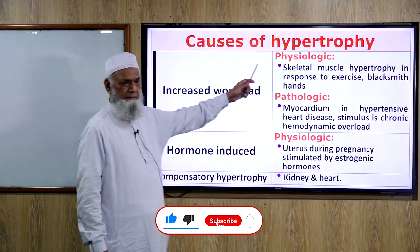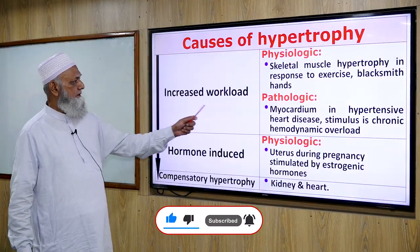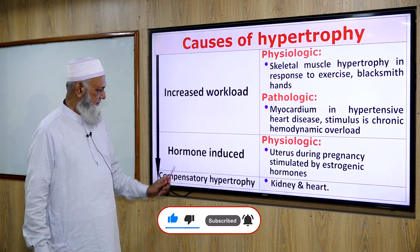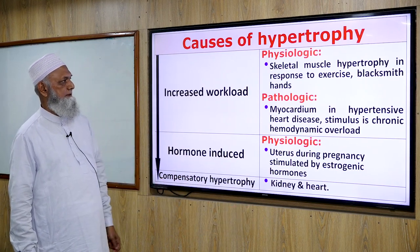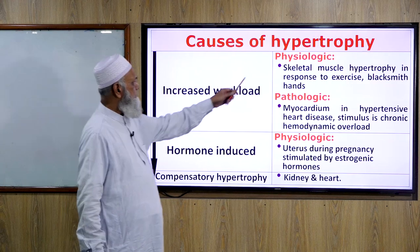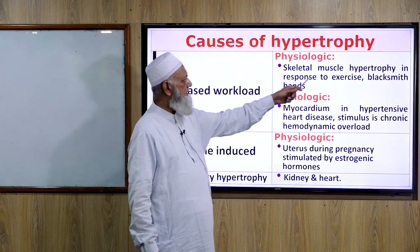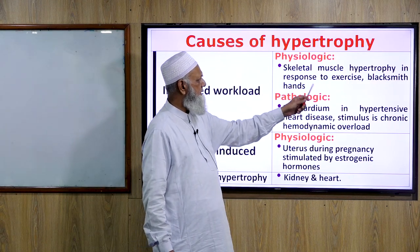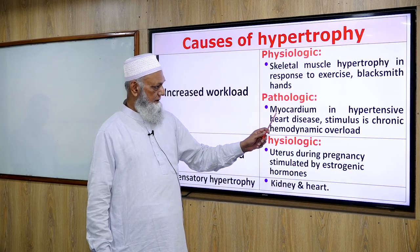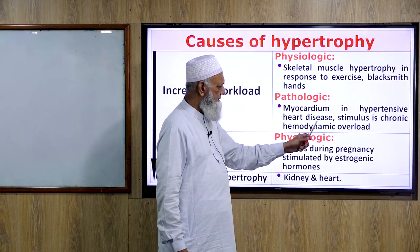There are three causes of hypertrophy: increased workload, hormone-induced, and compensatory hypertrophy. Increased workload can be physiological — such as skeletal muscle hypertrophy in response to exercise (e.g., blacksmith hands) — or pathological, such as myocardium hypertrophy in hypertensive heart disease, where the stimulus is chronic hemodynamic overload.